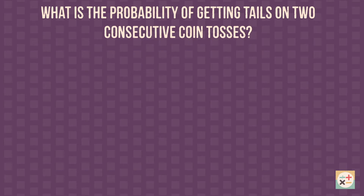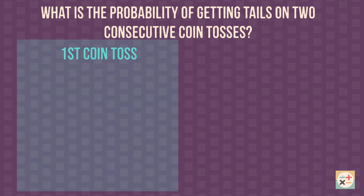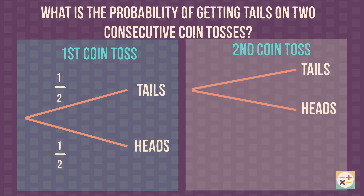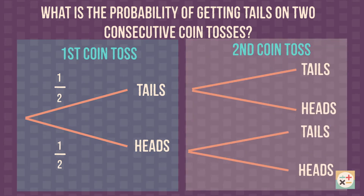For example, if we wanted to draw a tree diagram to show the probability of getting tails on two consecutive coin tosses, it would look like this. The outcome of the first coin toss is displayed in this column and the outcome of the second coin toss would be shown in this column. Notice that we need to write the outcomes of the second coin toss twice — one for each of the two different outcomes we may get on the first coin toss.